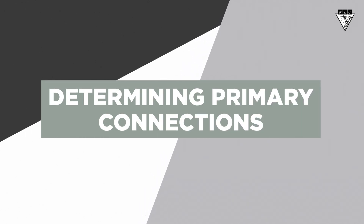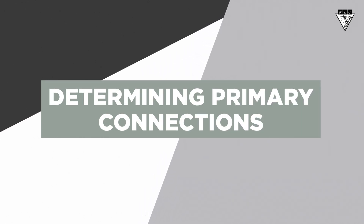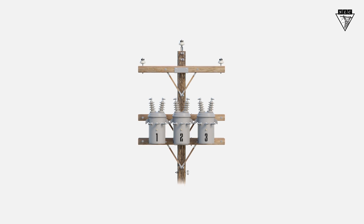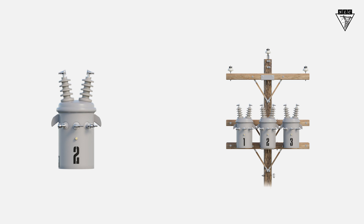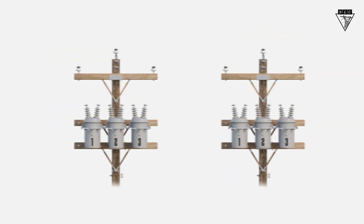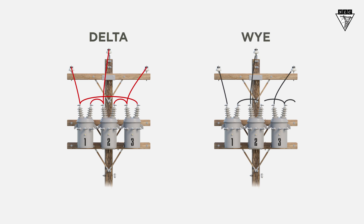In this video, we'll learn how to determine the primary connection for a three-phase transformer bank. To identify the primary connection, we'll need to reference the transformer's primary coil voltage rating and the system's phase-to-neutral and phase-to-phase voltage. Using that info, we can decide whether to connect delta or Y.